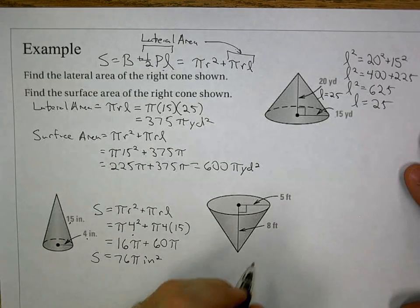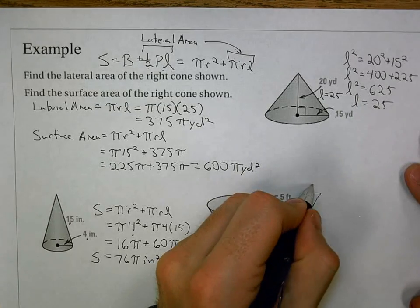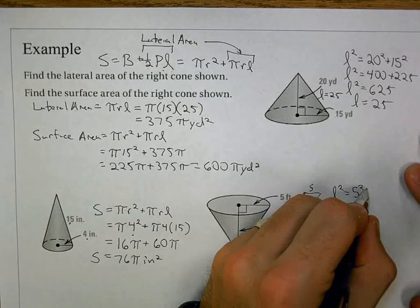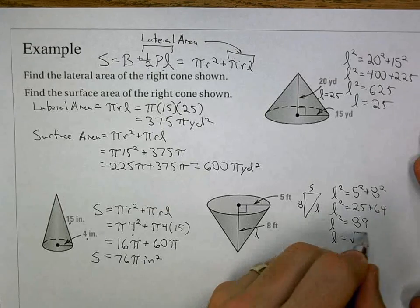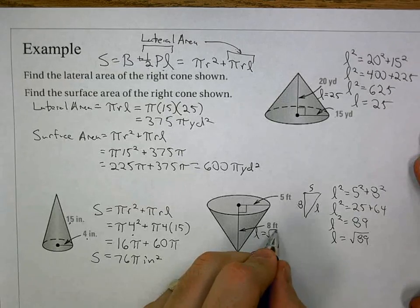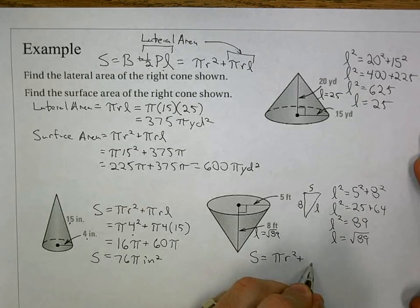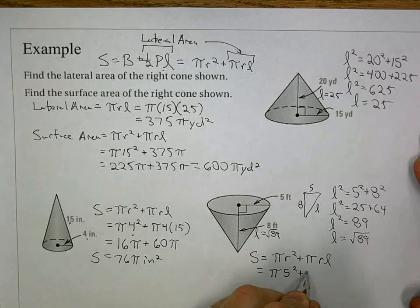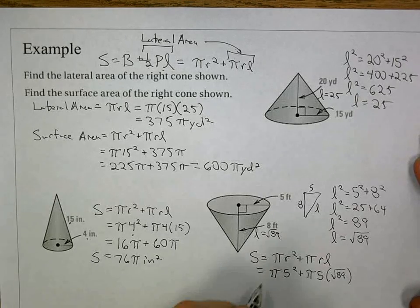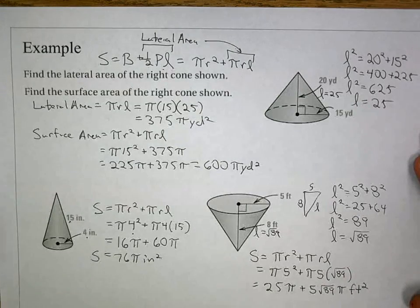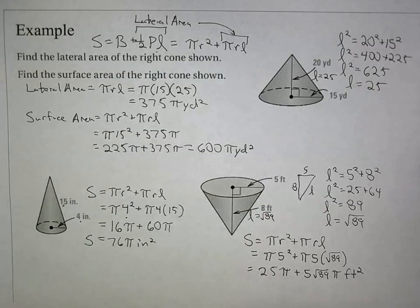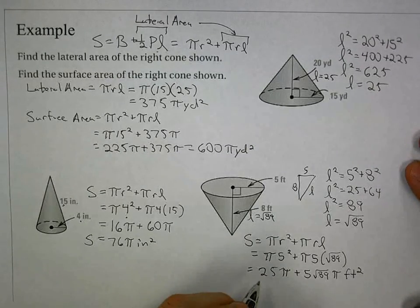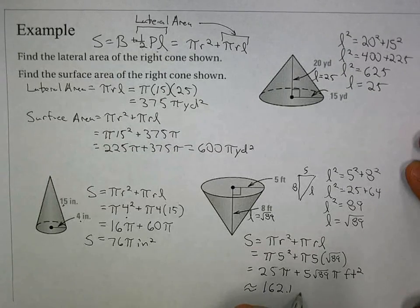The last example requires finding slant height with Pythagorean theorem. With radius = 5 and height = 8: L² = 5² + 8² = 25 + 64 = 89, so L = √89. Surface area = π(5²) + π(5)(√89) = 25π + 5√89·π. This is the exact simplified radical form. As a decimal, it comes out to approximately 162.1 feet squared.